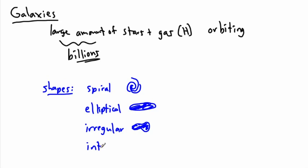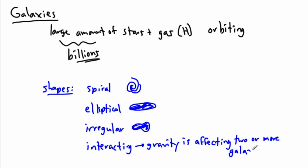And we can even have interacting. That means that gravity is affecting two or more galaxies, which means if galaxies come close enough to each other, then the actual materials in the galaxies can be sort of whipped around and moved. I think that's pretty interesting. But now when we look at these galaxies, let's actually take a look at our own.